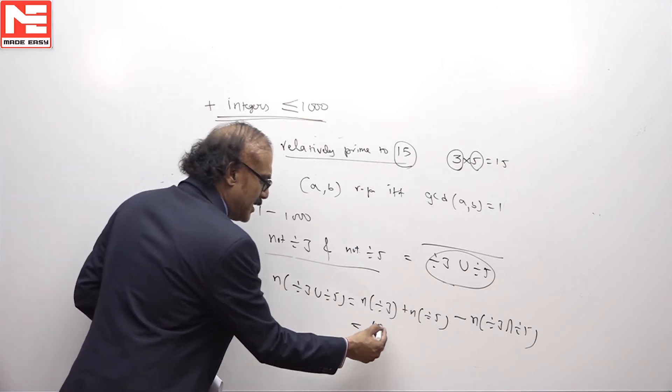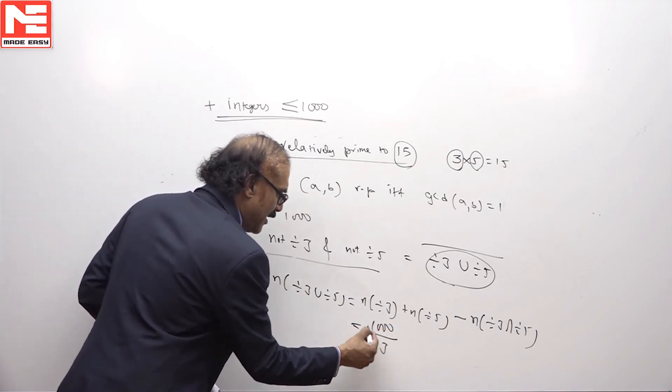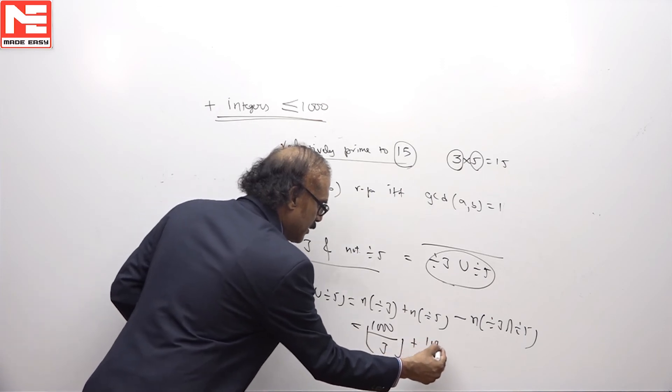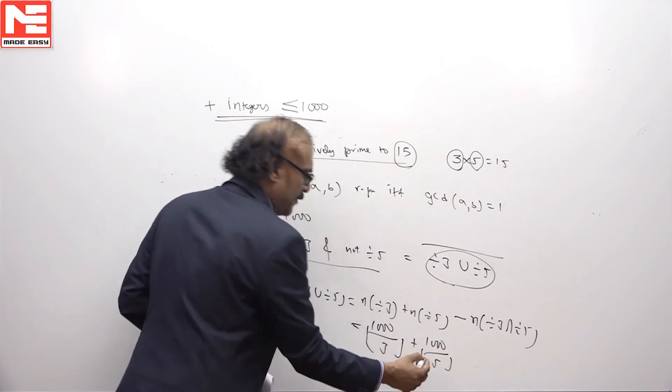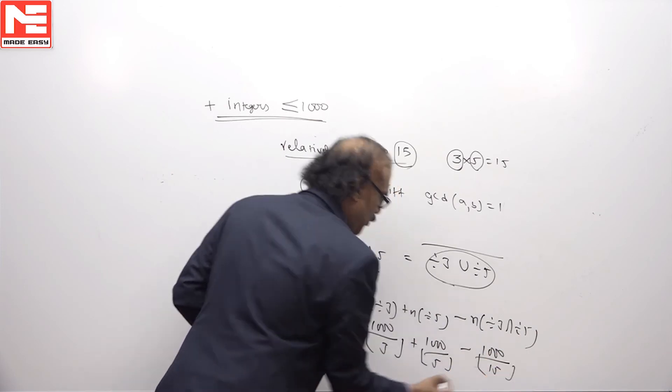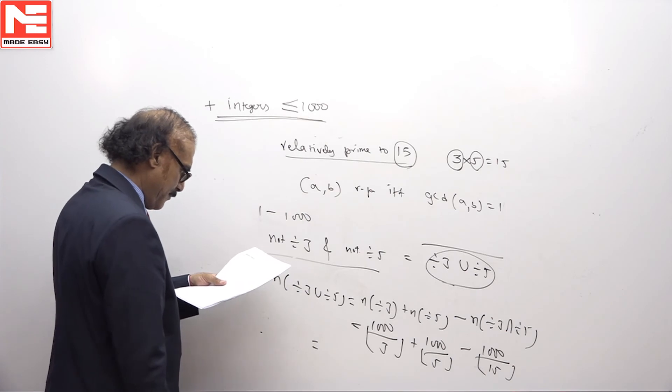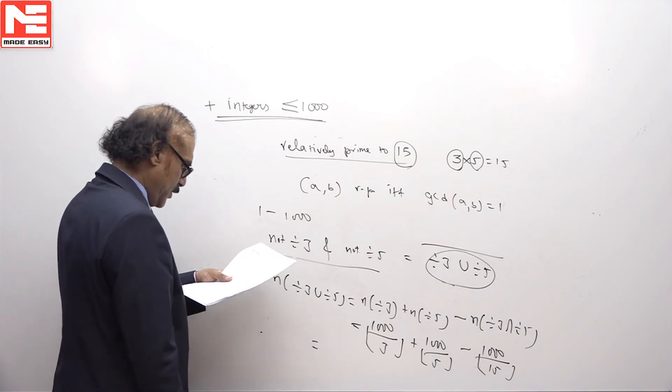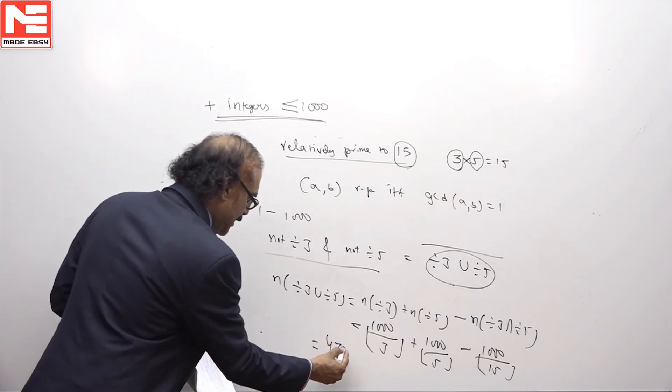Number of numbers from 1 to 1000 divisible by 3 is ⌊1000/3⌋ plus ⌊1000/5⌋ minus ⌊1000/15⌋, and this comes out to be equal to 473.